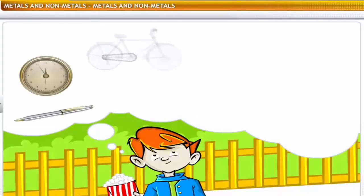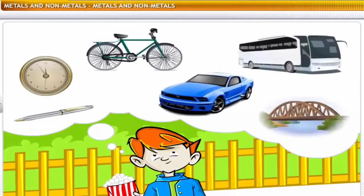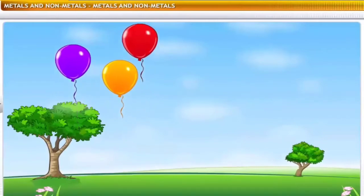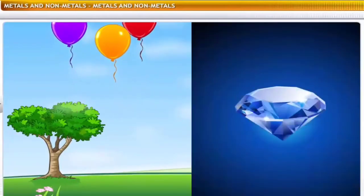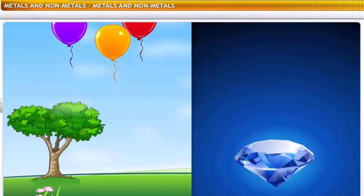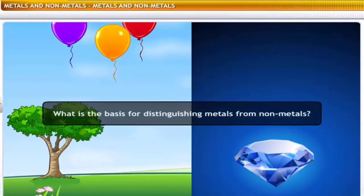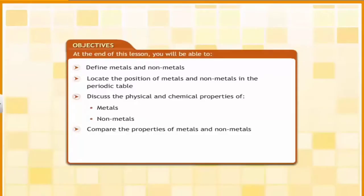Pen, watch, bicycle, car, bus and bridge are all made of metals. On the other hand, helium which makes balloons fly, and the carbon that constitutes diamonds, are non-metals. What is the basis for distinguishing metals from non-metals? To understand the scientific basis for this classification, you need to examine the physical and chemical properties of metals and non-metals. In this lesson, you will learn about the properties of metals and non-metals, and how they form compounds and how they can be separated.